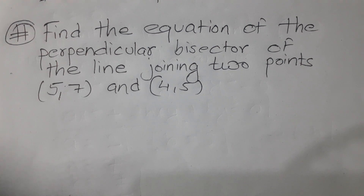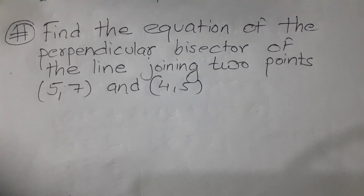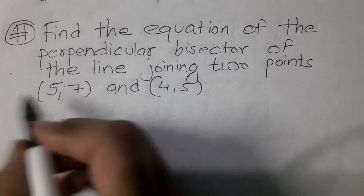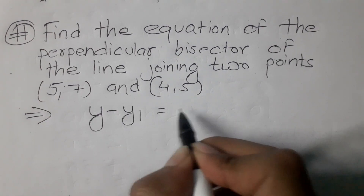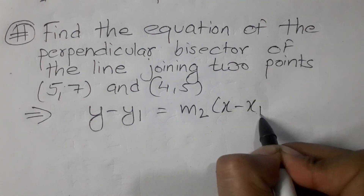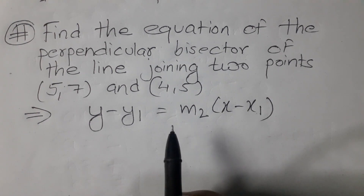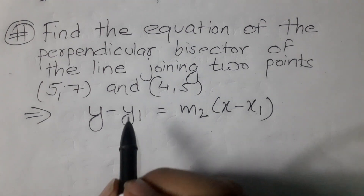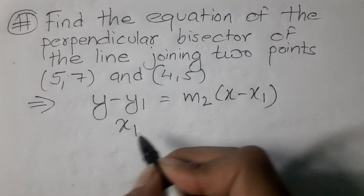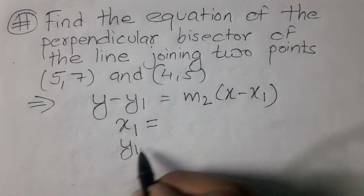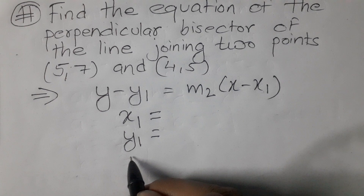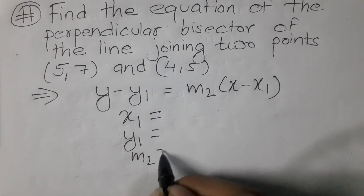First you need to be very clear that this question is related to finding the equation of a straight line. Before I start, you have to know one formula: y minus y1 is equals to m times bracket x minus x1. To find the equation of any line you need three things: x1, y1, and m — the slope.